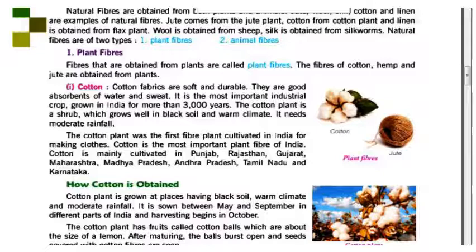The cotton plant needs moderate rain. It was the first fiber plant cultivated in India for making cloth. Cotton is mainly cultivated in Punjab, Rajasthan, Gujarat, Maharashtra, Madhya Pradesh, Tamil Nadu, and Karnataka.